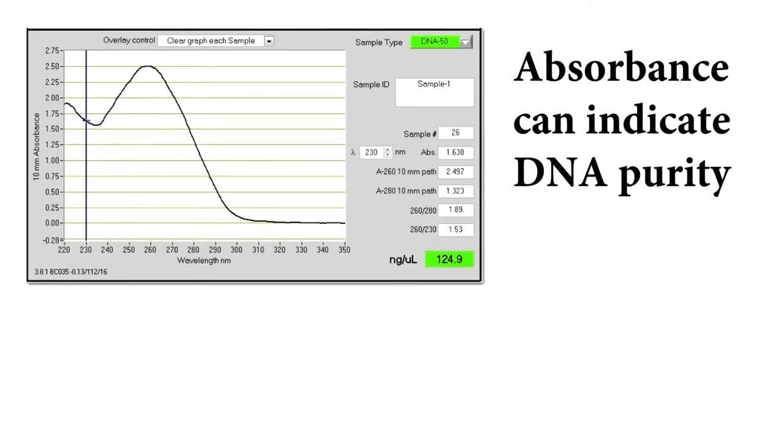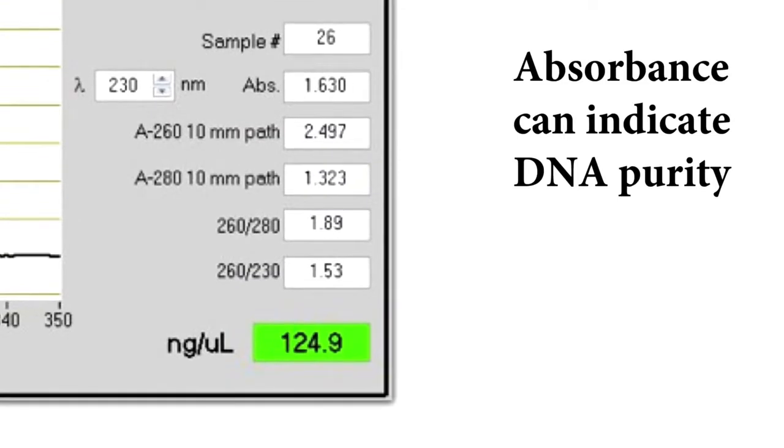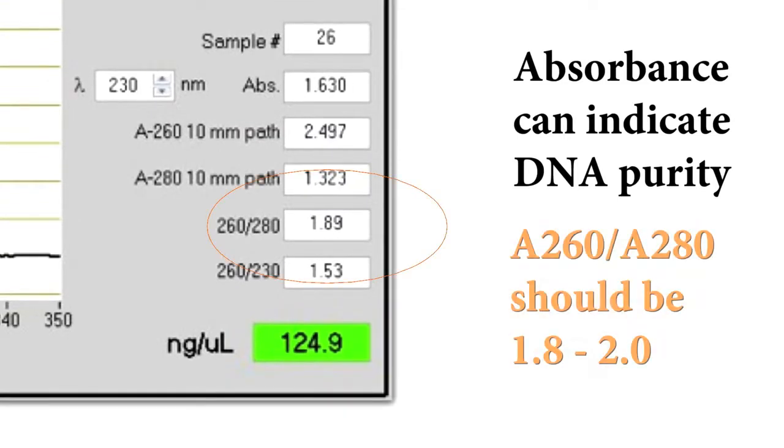Absorbance measurements can also be used as an indication of DNA purity. Ideally, the ratio of the absorbance at 260 nm to 280 nm should be between 1.8 to 2.0.